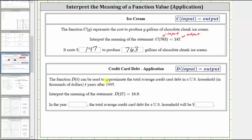The function d of t can be used to approximate the total average credit card debt in a US household in thousands of dollars t years after 1995. Interpret the meaning of the statement d of 27 equals 18.9.